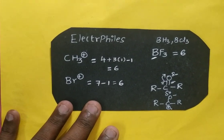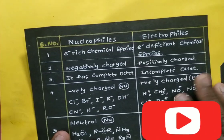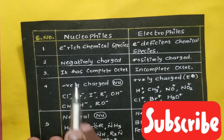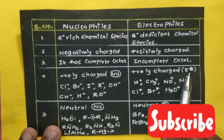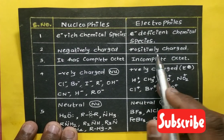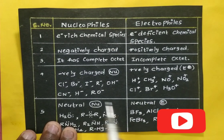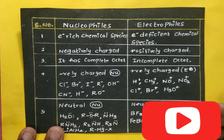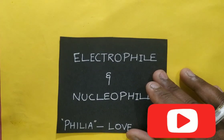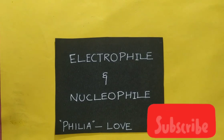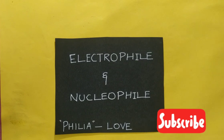To recap: nucleophiles are generally electron-rich chemical species — usually negatively charged, though neutral nucleophiles are also available. Electrophiles are electron-deficient species — commonly positively charged, though neutral electrophiles also exist. Thank you so much for watching. Please share this with others, subscribe to the channel, and don't forget to like this video.